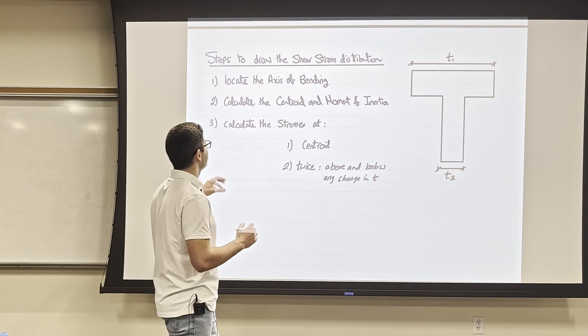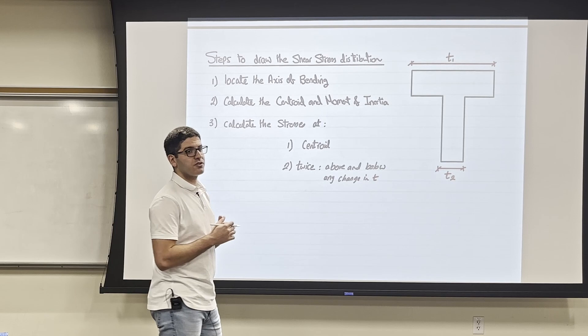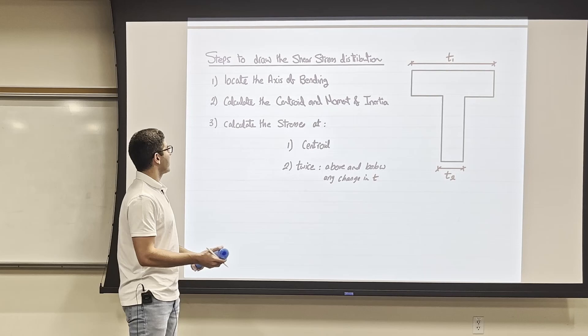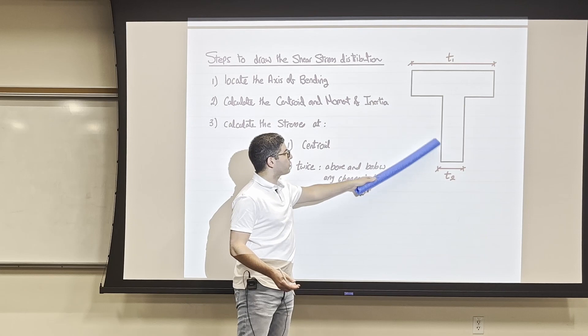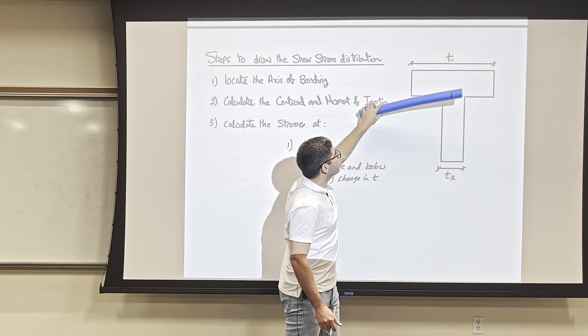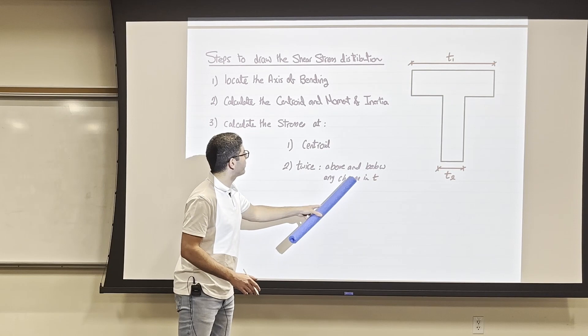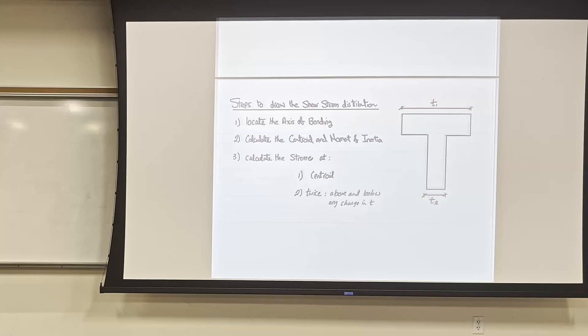Here are the steps to calculate shear stress distribution. First, identify the axis of bending — this determines how you calculate the centroid and moment of inertia. Calculate the shear stress at the centroid and at any location where the width changes. At width changes, calculate twice: just above and just below the change. You don't need to calculate at the top or bottom surfaces.